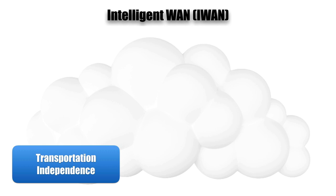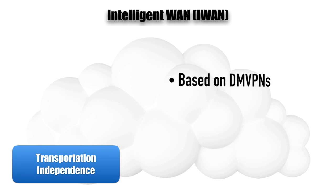In the meantime, that new office might use cellular data to get back to headquarters. iWAN gives us a layer of abstraction — we don't really care what the underlying technology is. This is possible because iWAN is based on DMVPN, Dynamic Multipoint Virtual Private Networks.